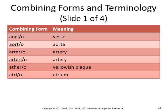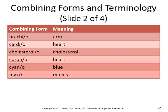Atrial pertains to the atrium. Brachio means arm, cardio means heart, cholesterol, corona as in coronary bypass. Brachial artery, cardiomegaly is enlargement of the heart, cardiomyopathy is disease of heart muscle. Cyan means blue — cyanosis would be a bluish discoloration — and myco means mucus.